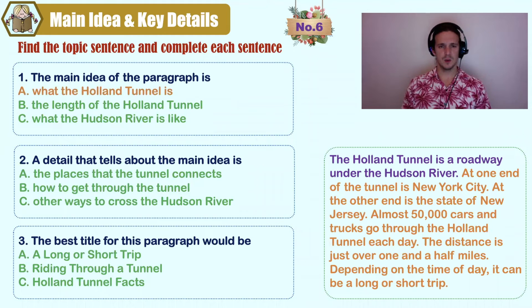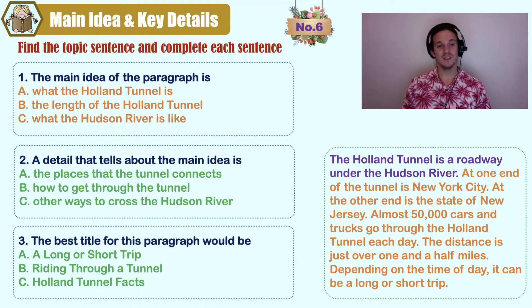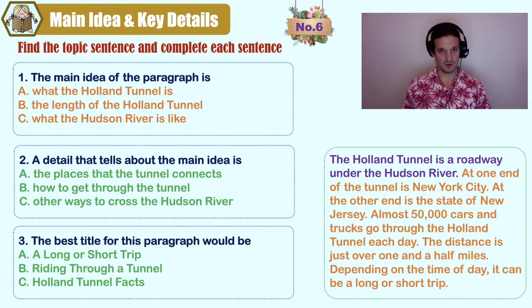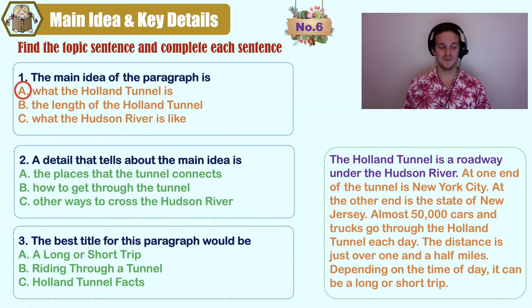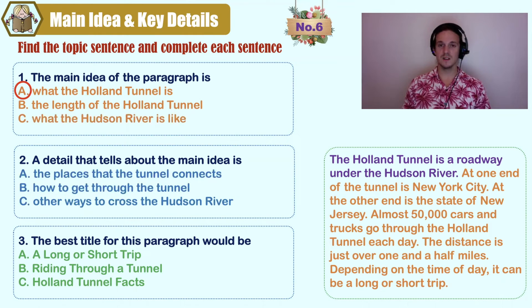The main idea: A) what the Holland Tunnel is, B) the length of the Holland Tunnel, C) what the Hudson River is like. One of these is not mentioned; one is a detail. Look at the words in purple: 'The Holland Tunnel is a roadway under the Hudson River.' That answers A, what the Holland Tunnel is. Which detail is in the paragraph? A) the places that the tunnel connects, B) how to get through the tunnel, C) other ways to cross the Hudson River.